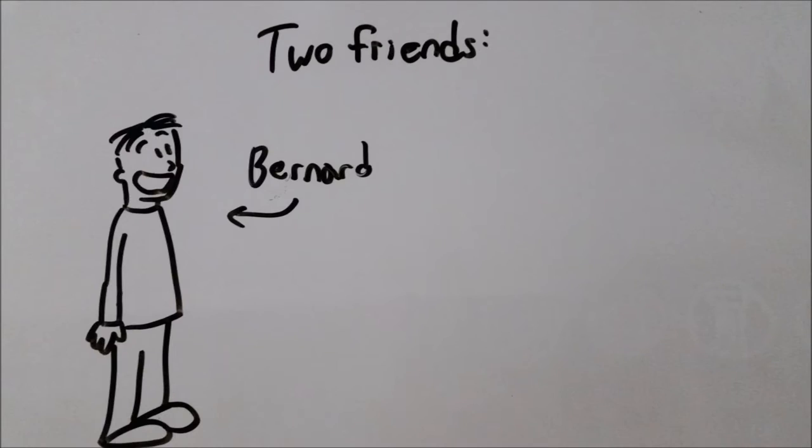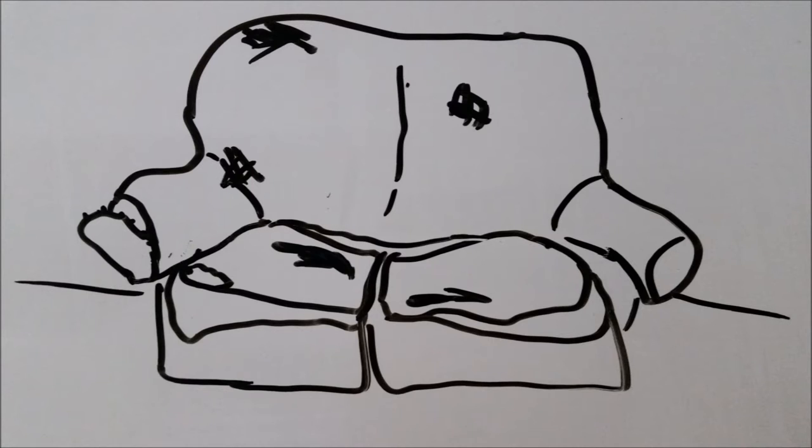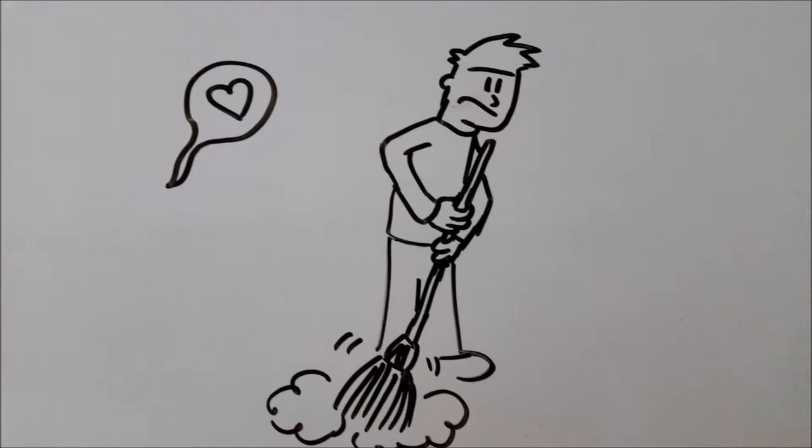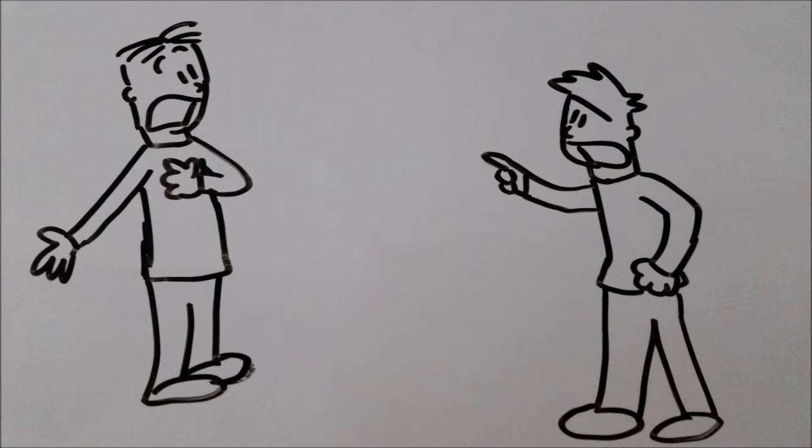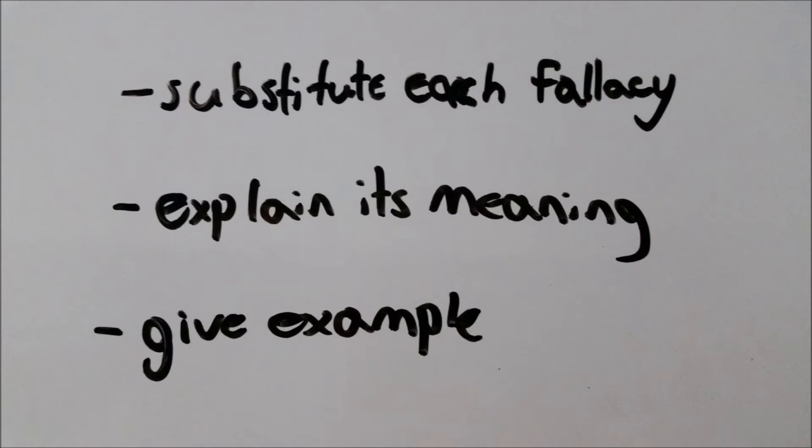Two friends, Bernard and Alan, live in the same house as roommates. Bernard has a disgusting couch that he kept since his college years and really only holds onto it for sentimental value. Alan is a bit of a neat freak and likes to keep the house tidy, so naturally he wants to toss the couch to the curb. The two get into an argument, and here I will substitute each logical fallacy, explain its meaning, and give an example using our scenario. So let's get started.